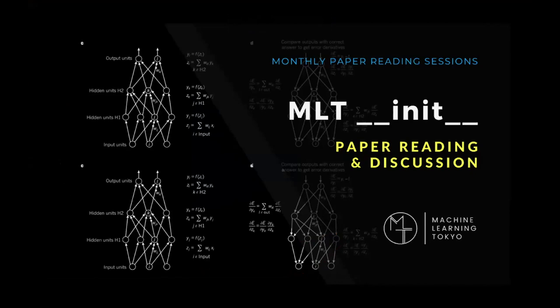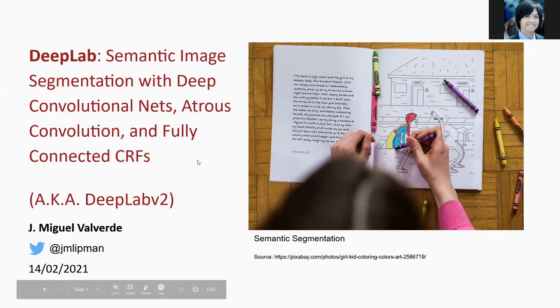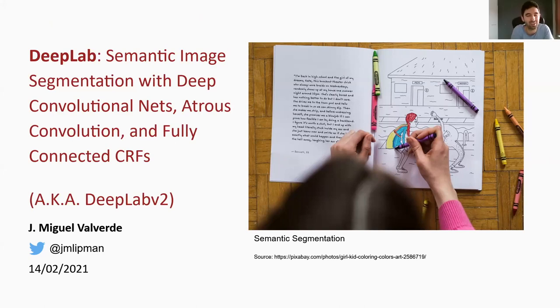Welcome everyone. This is the second session of MLP NEAT paper reading and discussion. Thanks for joining us today. I'm going to present the paper 'DeepLab: Semantic Image Segmentation with Deep Convolutional Nets, Atrous Convolution, and Fully Connected CRFs.'